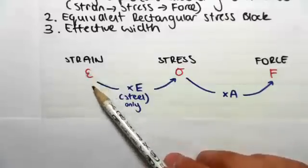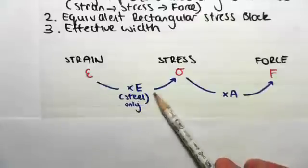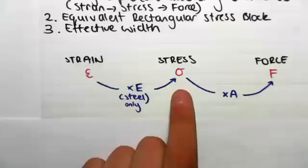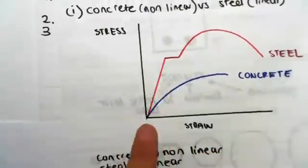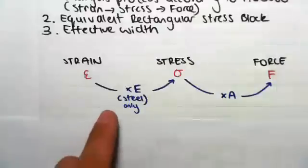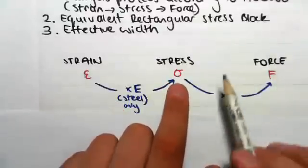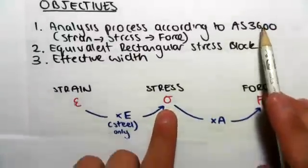Based on this strain and the elastic modulus of the steel only, we can work out the stress in the steel. Now, the reason we can only do that for steel is because it's a linear material. So this formula only holds for linear materials. The stress in the concrete is going to be given to us in the code.